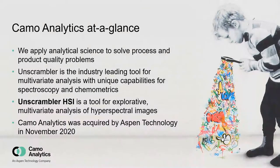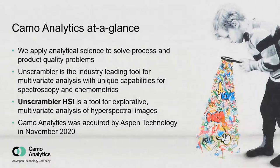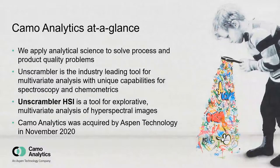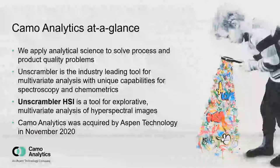So who are we? We are experts in process spectroscopy and analytics. We have been solving process and product quality problems for quite some time. Unscrambler is the software tool we have been using for these purposes since the first version back in 1984, so it's been around for many years. It is an industry-leading tool for multivariate analysis and very well suited for spectroscopic and chemometrics analysis.